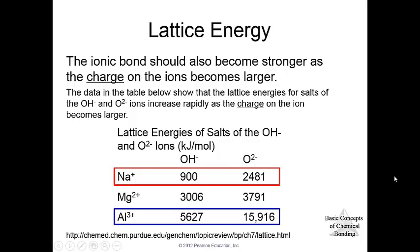Let's really get extreme and go to aluminum. If we make aluminum hydroxide, we have 5,627 kilojoules per mole, which is much higher than the sodium oxide. And then let's also look at alumina, AL2O3. That's 15,916 kilojoules per mole, a really high lattice energy.